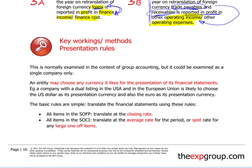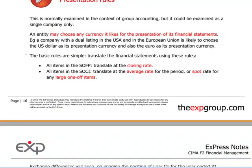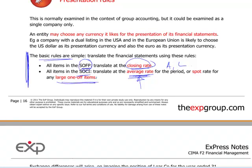Let's take a quick example and see how it all fits together. Here you have the very basic rule for translation summarised: in the statement of financial position, all assets and liabilities use the closing rate. In the statement of comprehensive income, you use the average rate for the period — because the SOCI shows the cumulative effects of transactions during the year, whereas the SOFP is the picture at a point in time. There is an exception to the average rate: for any large one-off transactions you use the spot rate, because using the average rate for a large one-off amount could be very misleading.